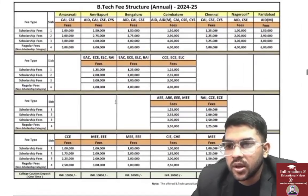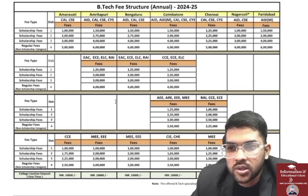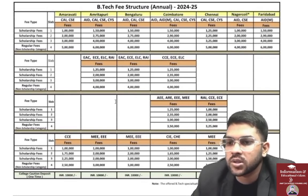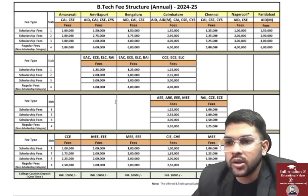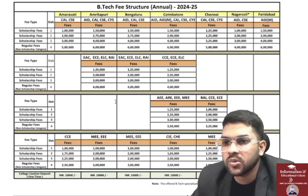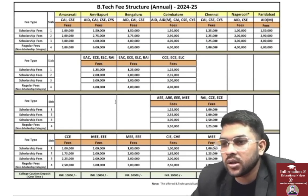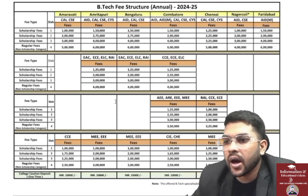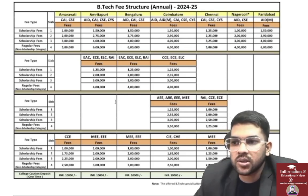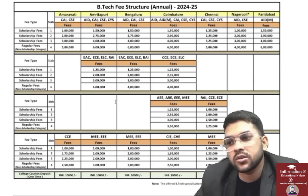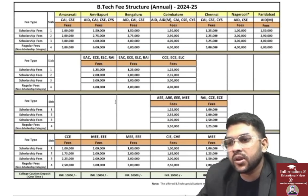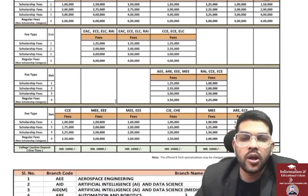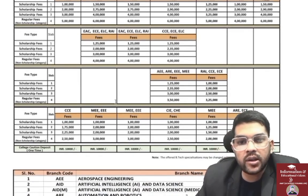The highest fee is 6 lakhs per year for Coimbatore, Amritapuri, and Bangalore campuses — that is the regular (non-scholarship) category fee. For Slab 3, the fee is 4 lakhs; for Slab 1, it is only 1.5 lakhs — for the top three campuses (Amritapuri, Bangalore, Coimbatore) for branches like CSE, Cyber Security, AI, and Data Science. Slab 1 has only 10% seats, Slab 2 has 20%, Slab 3 has 20%, and 50% of seats are in the regular fee category.